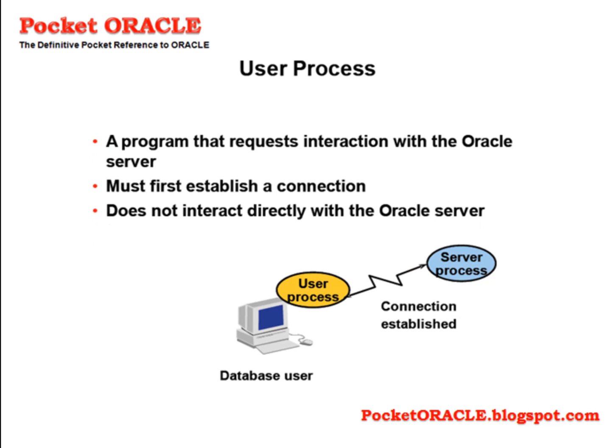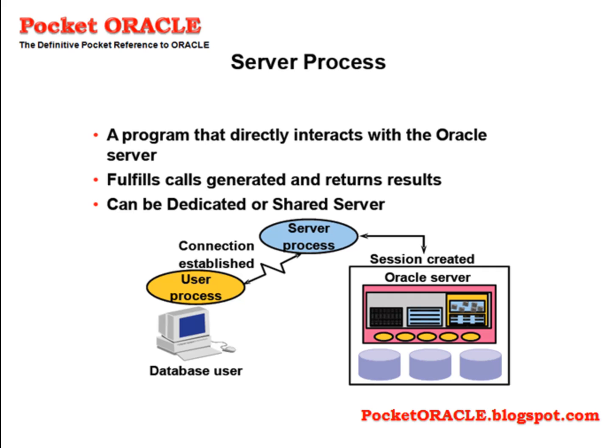The user process is a program that requests interaction with the Oracle server. It starts at the time a database user requests connection to the Oracle server; it must first establish a connection and does not interact directly with the Oracle server. The server process is a program that directly interacts with the Oracle server. It connects to the Oracle instance, is started when a user establishes a session, and fulfills calls generated and returns results. It can be a dedicated or a shared server.